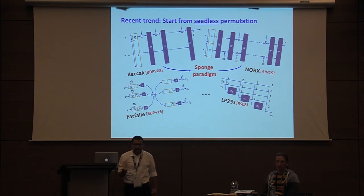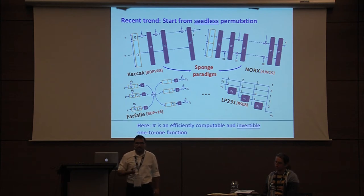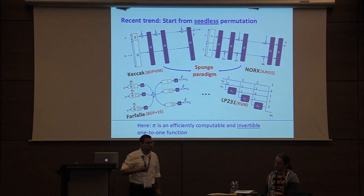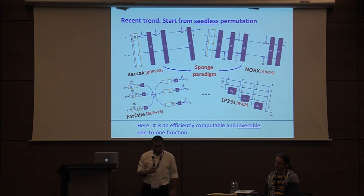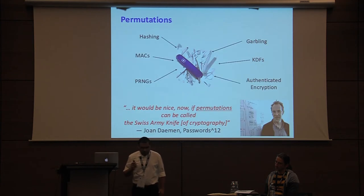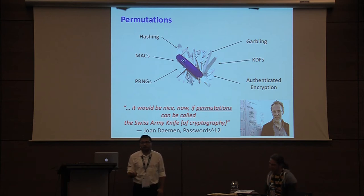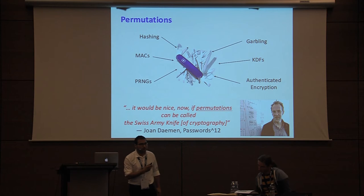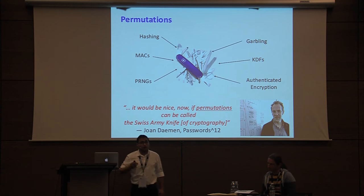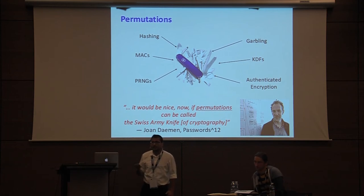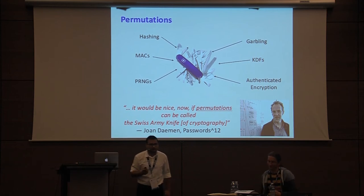This permutation pi is nothing but an efficiently computable, efficiently invertible one-to-one function. These permutations have seen a lot of applications in recent times, and prominent cryptographers like Joan Daemen have even gone on to call them the Swiss army knives of cryptography.